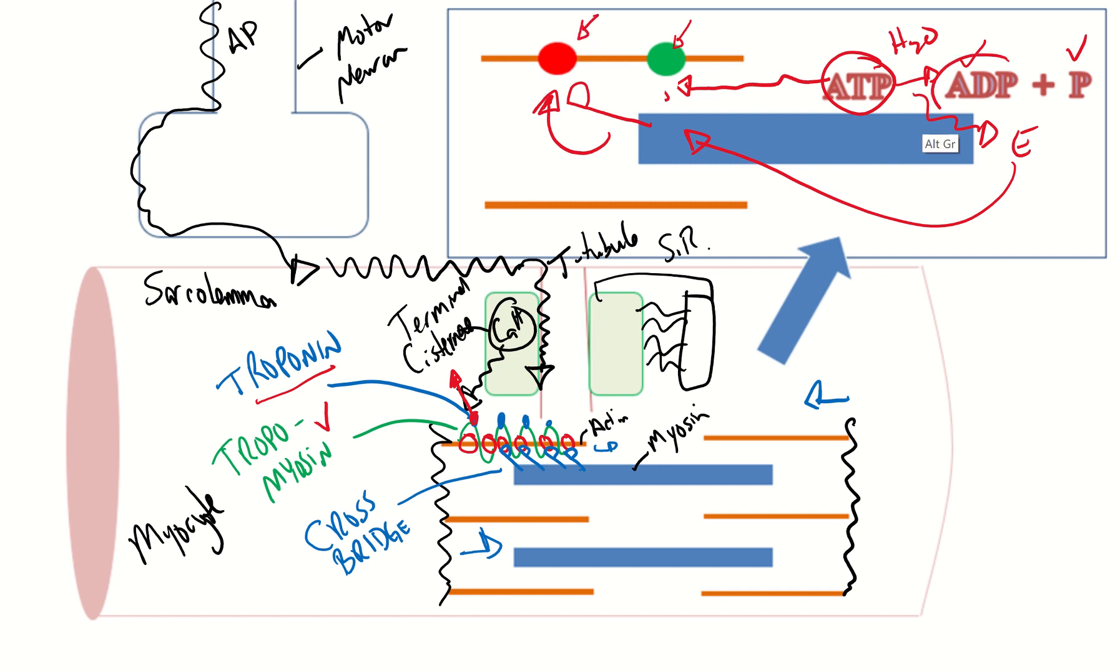So at this point ADP and phosphate are going to be lingering on this myosin head. To get it to create a cross bridge you're going to kick off the phosphate. The phosphate gets kicked off and you can imagine this myosin head is going to get into that myosin binding site.